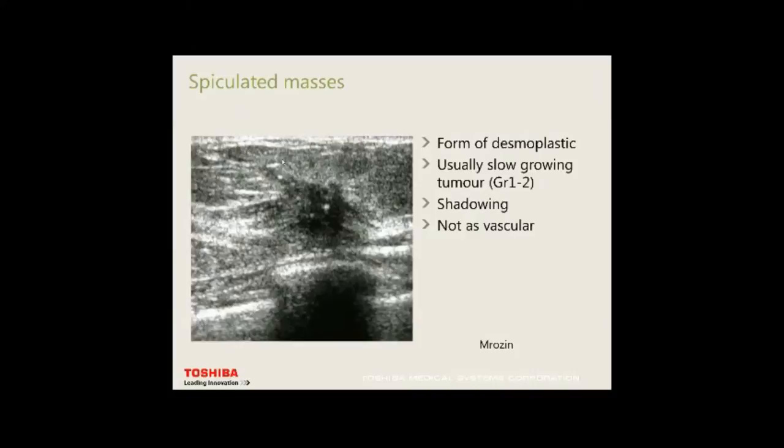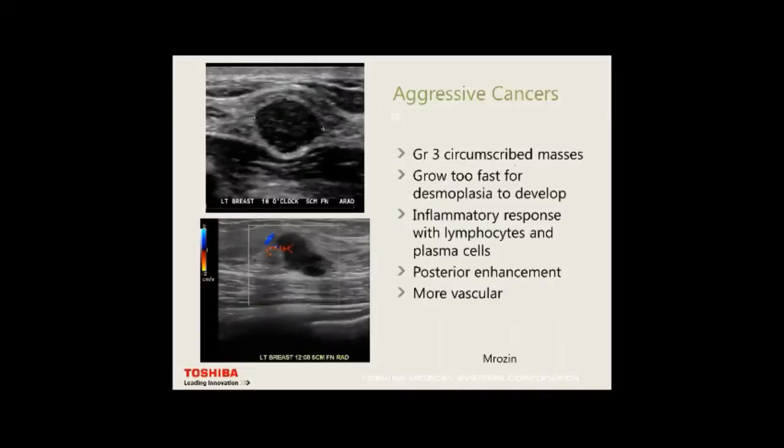You can see the desmoplastic reaction and spiculated masses around these lesions — they tend to shadow. Grade 1 and grade 2 breast cancers are the most common types and tend not to be highly vascular, though vascularity is often seen.